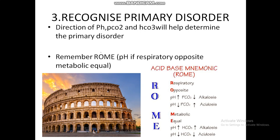We recognize the primary disorder using the mnemonic ROME: Respiratory Opposite, Metabolic Equal. In respiratory disorders, pH and PCO2 move in opposite directions. For example, if pH is high and PCO2 is low, it is respiratory alkalosis. If pH is low and PCO2 is high, it is respiratory acidosis — for instance, pH 7.1 and PCO2 80 indicates respiratory acidosis.